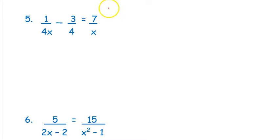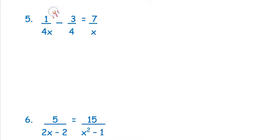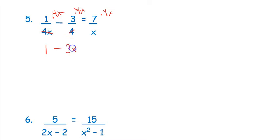Now we're moving on to rational equations — equations with fractions in them — and you use the same concept. I look at my fractions, decide the common denominator is 4x, and multiply everything by 4x. Over here I cancel, leaving 1. I cancel the 4, leaving 3 times x. Then I cancel the x, leaving 7 times 4, which is 28. That makes it a whole lot easier — you just have an equation to solve. I subtract 1.